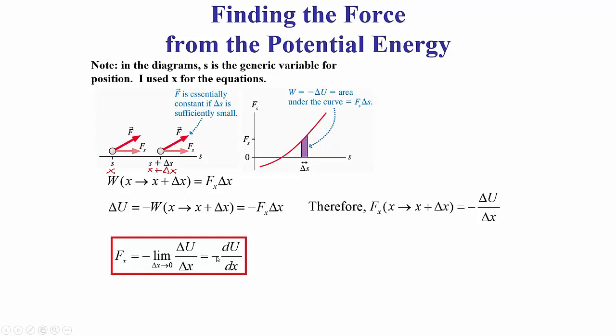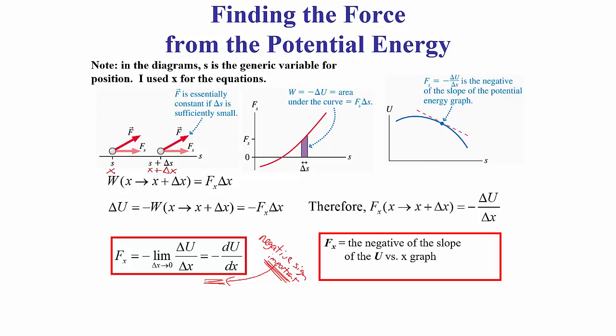The x component of the force is the negative derivative of potential energy with respect to position. The potential energy needs to be a function of position, so we take the derivative of the potential energy with respect to position, take the negative of that, and that gives us the parallel component of the force as a function of position. That negative sign is important: the force is negative du/dx, meaning it's the negative of the slope of a potential energy versus position graph.